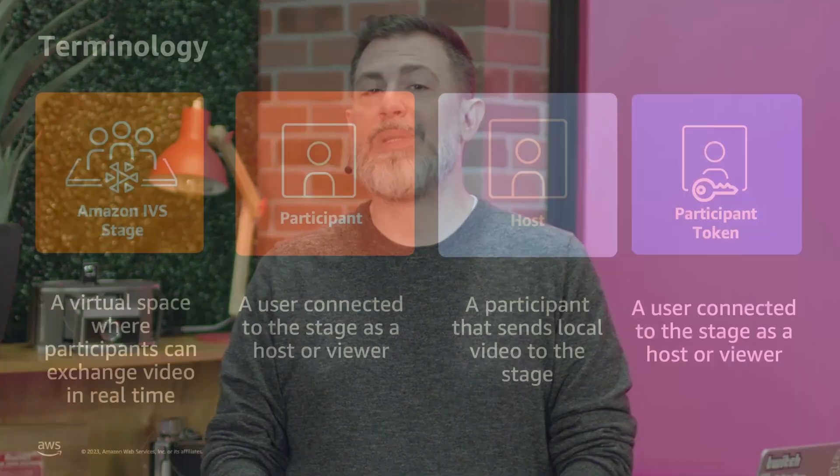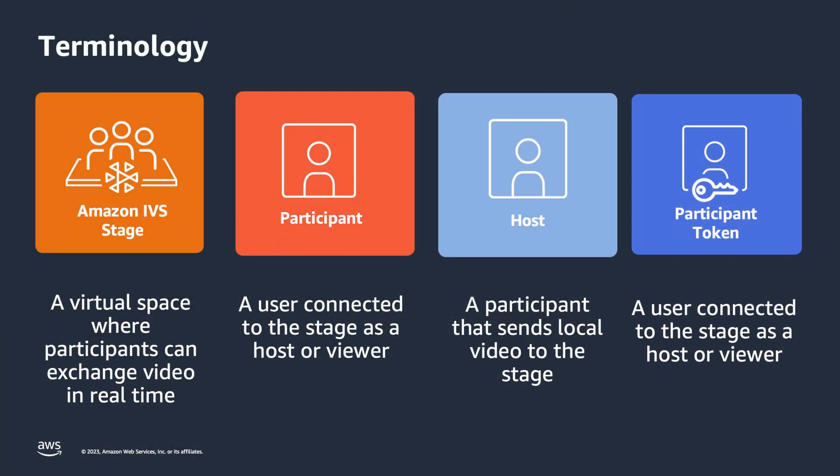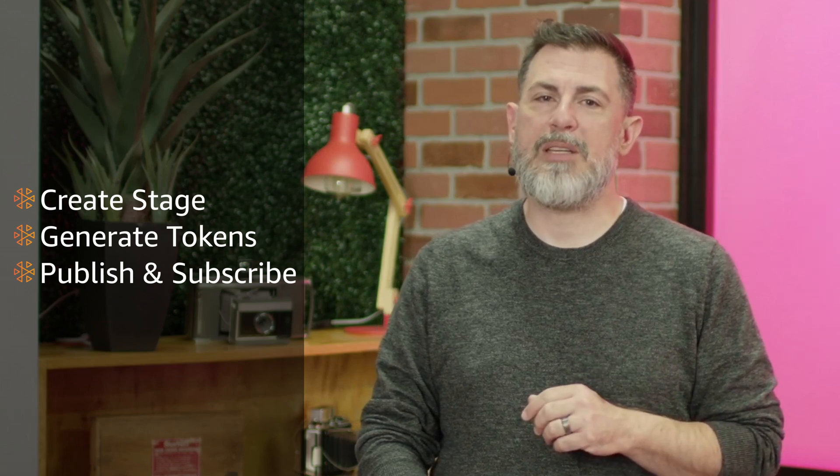You'll want to be familiar with a few new terms like stage and participant token when working with Amazon IVS real-time streams and reading through the documentation. There are three steps necessary to try out real-time streaming with Amazon IVS: creating a stage, generating participant tokens, and publishing and subscribing.